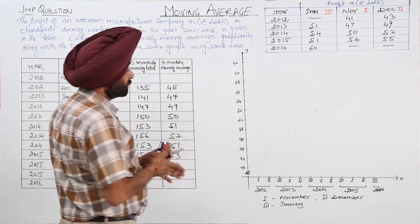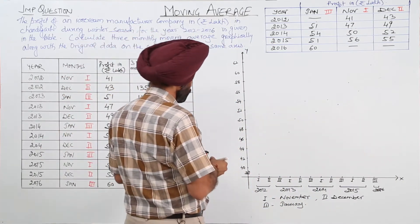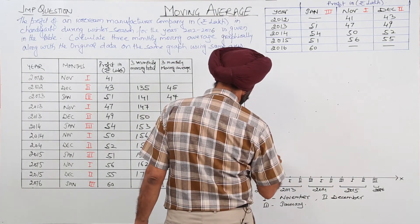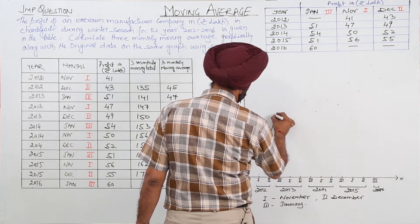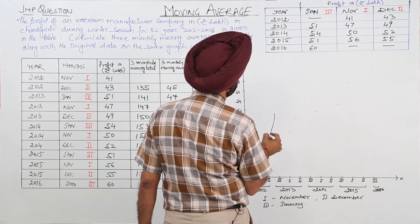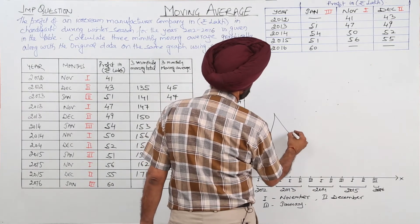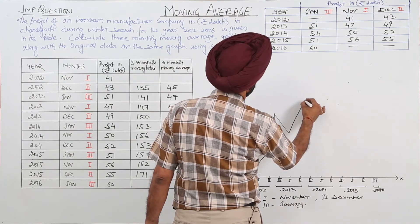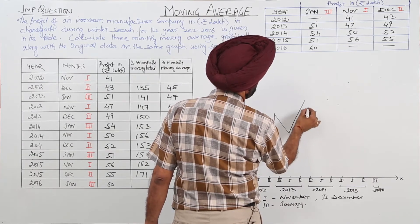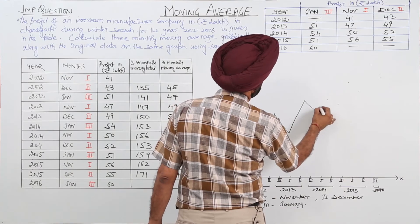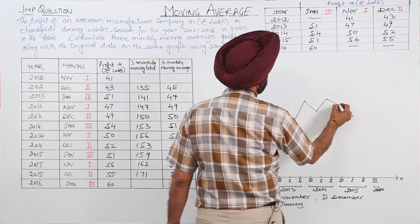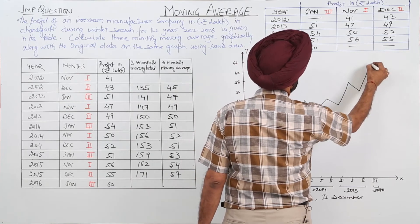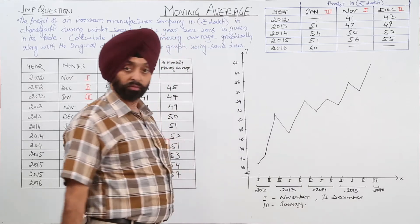So these are the points. Now let's join these points. Starting from first, that is 41. 41 this part, then this part. 51, 47, 49, 54, 50, 52, 51, 56, 55, and 60. So this becomes the graph.